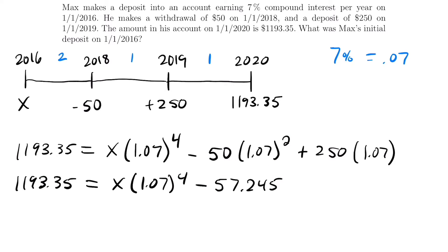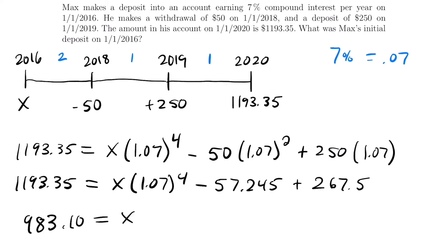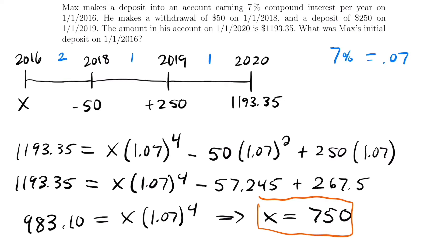After combining the constant terms and subtracting from $1,193.35, we get $983.10 equals x times 1.07 to the fourth power. Dividing $983.10 by 1.07 to the fourth gives us x equals $750. So Max's initial deposit on the 1st of January 2016 was $750. He let that accumulate interest, even though he took out some money and added more in, and we were able to figure out what he started with by setting up this basic cash flow equation.